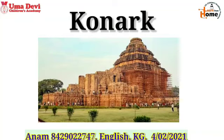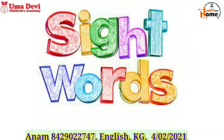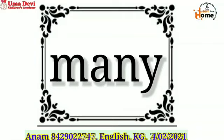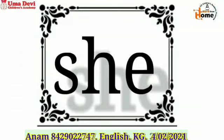Now let's read some sight words. Look at this sight word — tell me which sight word is this? 'See.' Repeat after me: see. Now look at the next sight word — which sight word is this? 'Many.' Repeat after me: many. Now look at this sight word — which sight word is this? 'She.' This sight word is: she.